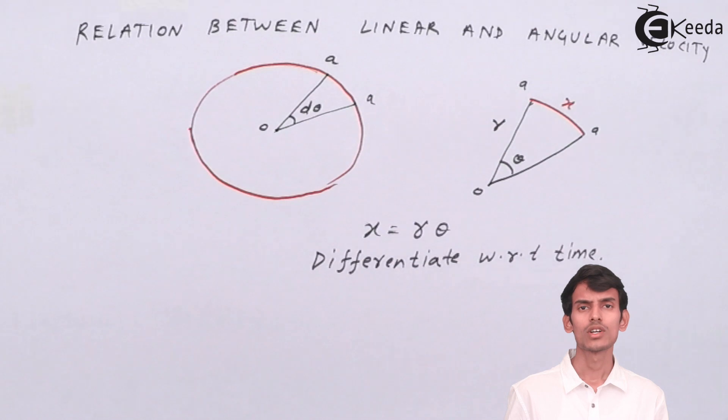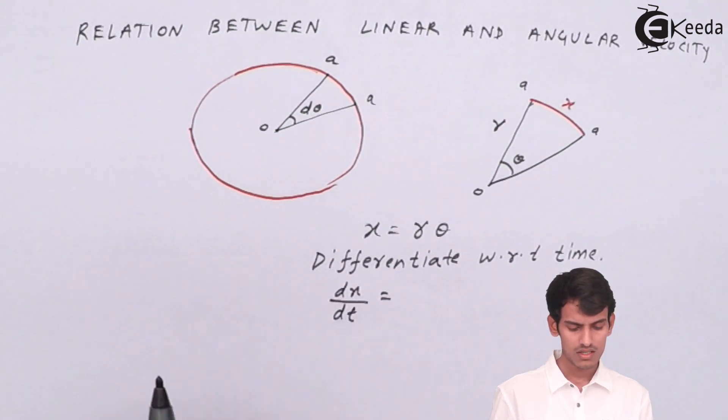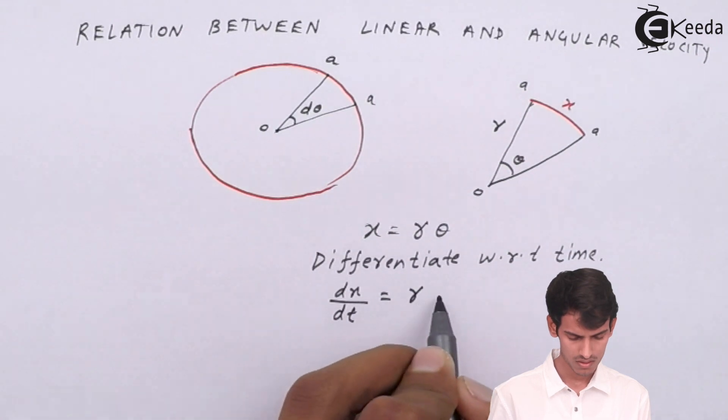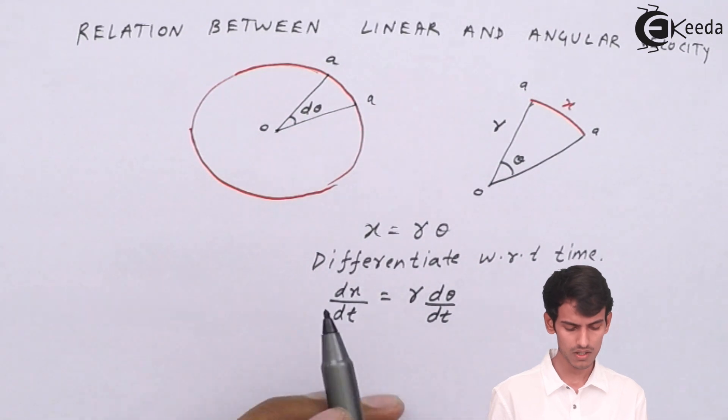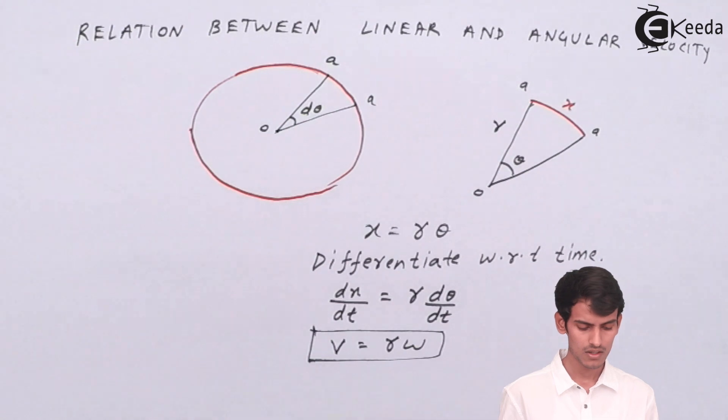And time we'll denote as t. Since r is constant you can keep r outside and differentiate theta. So this is what we get. Now from linear motion you can say that dx by dt is nothing but v, and d theta by dt is nothing but omega. So I have derived the relation that is v equal to r times omega. So the linear velocity is nothing but the radius times the angular velocity.